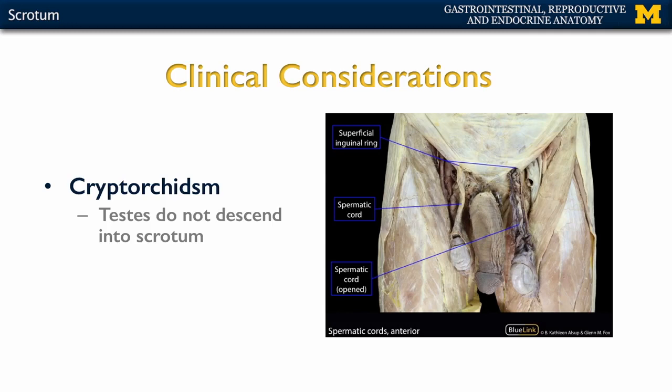As discussed previously, the testes develop within the abdomen and then descend eventually into the scrotum, typically around seven months. In certain cases that descent does not occur, and if this happens bilaterally it can have very serious implications because the testes stay within the body, subject to the higher temperatures there as opposed to the scrotum, where temperature is about two to three degrees lower. Often, even if an individual is born without complete descent, it typically happens spontaneously around three months to up to a year. If it has not done so, surgical intervention can play a role to prevent infertility from occurring.